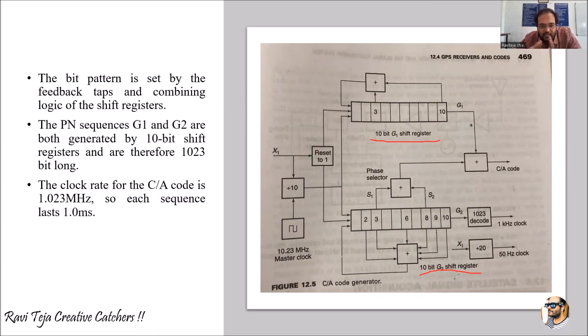This particular shift register will be somewhere around 1023 bit long. The clock rate for the C/A code is 1.023 megahertz, so each and every sequence will be one millisecond. So this is the C/A code generator using shift registers.